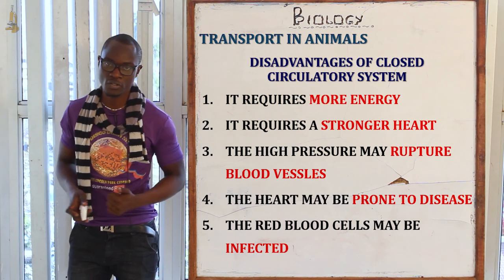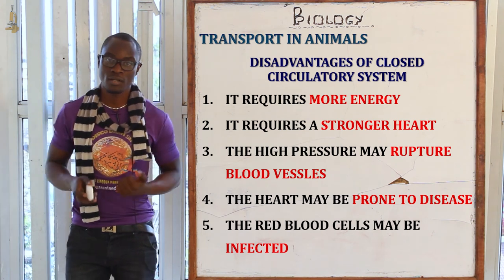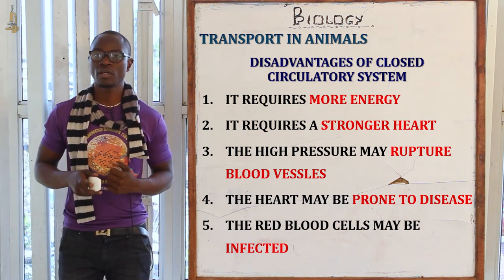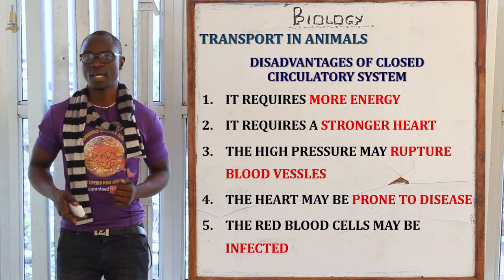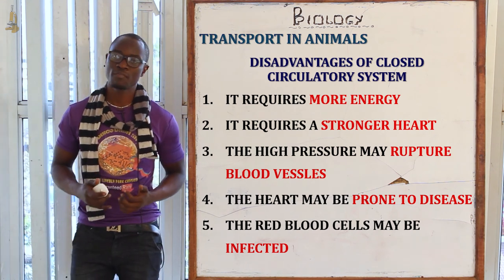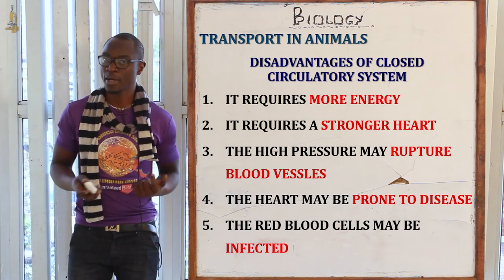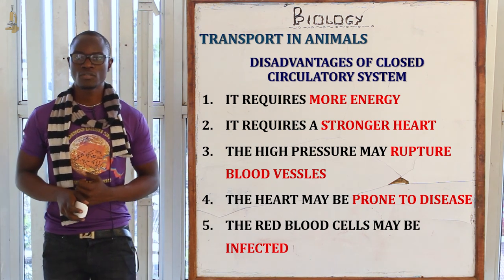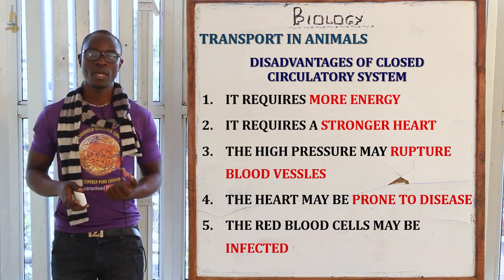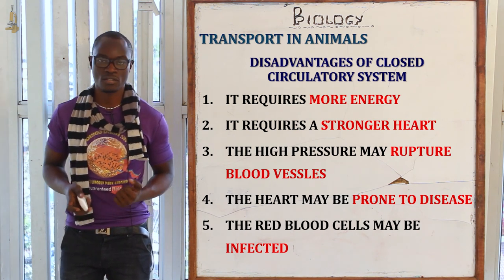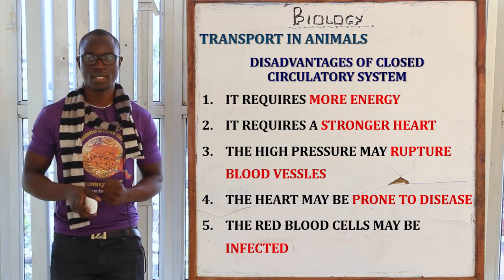The disadvantages of the closed circulatory system include: it requires a lot of energy; it requires a very strong heart to function; the pressure created by the heart may rupture blood vessels; and the heart may be prone to many diseases, such as those caused by hypertension or heart attack. The circulatory system may also be infected by different pathogens. We will meet in the next class to continue discussing the mammalian circulatory system.